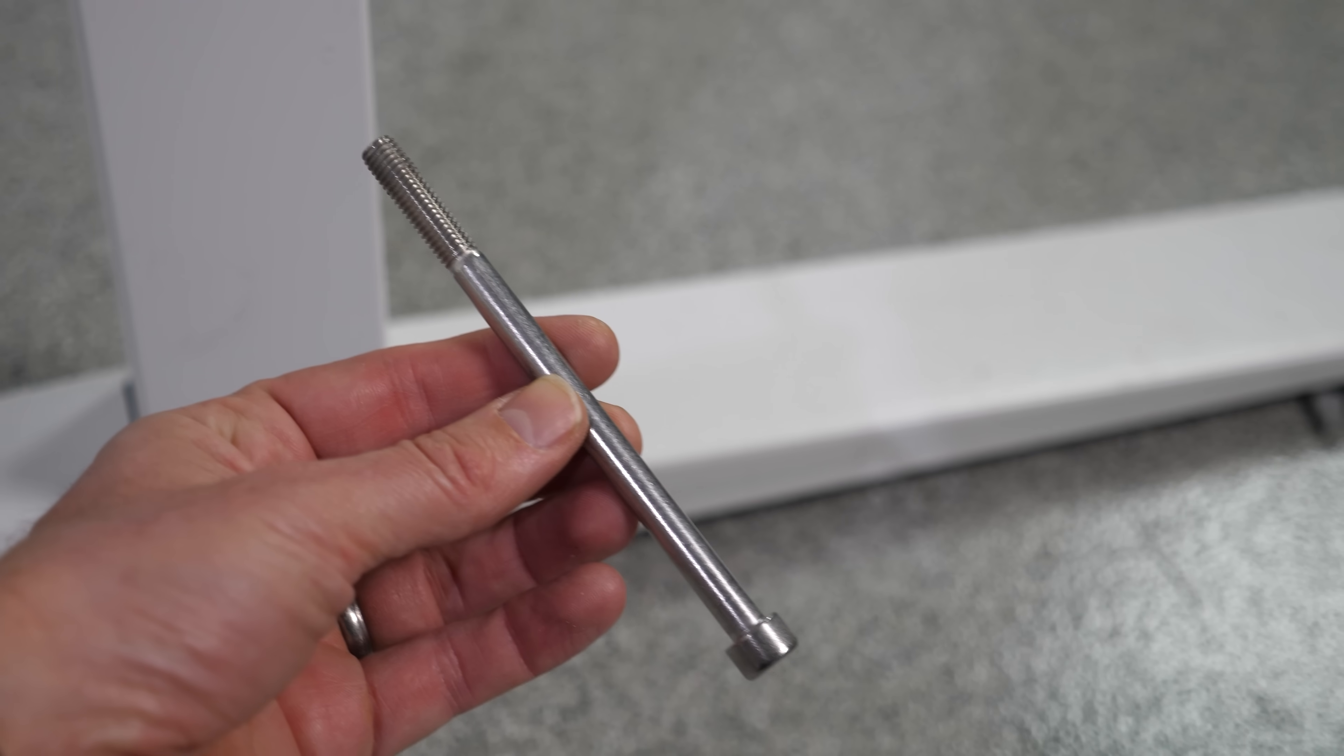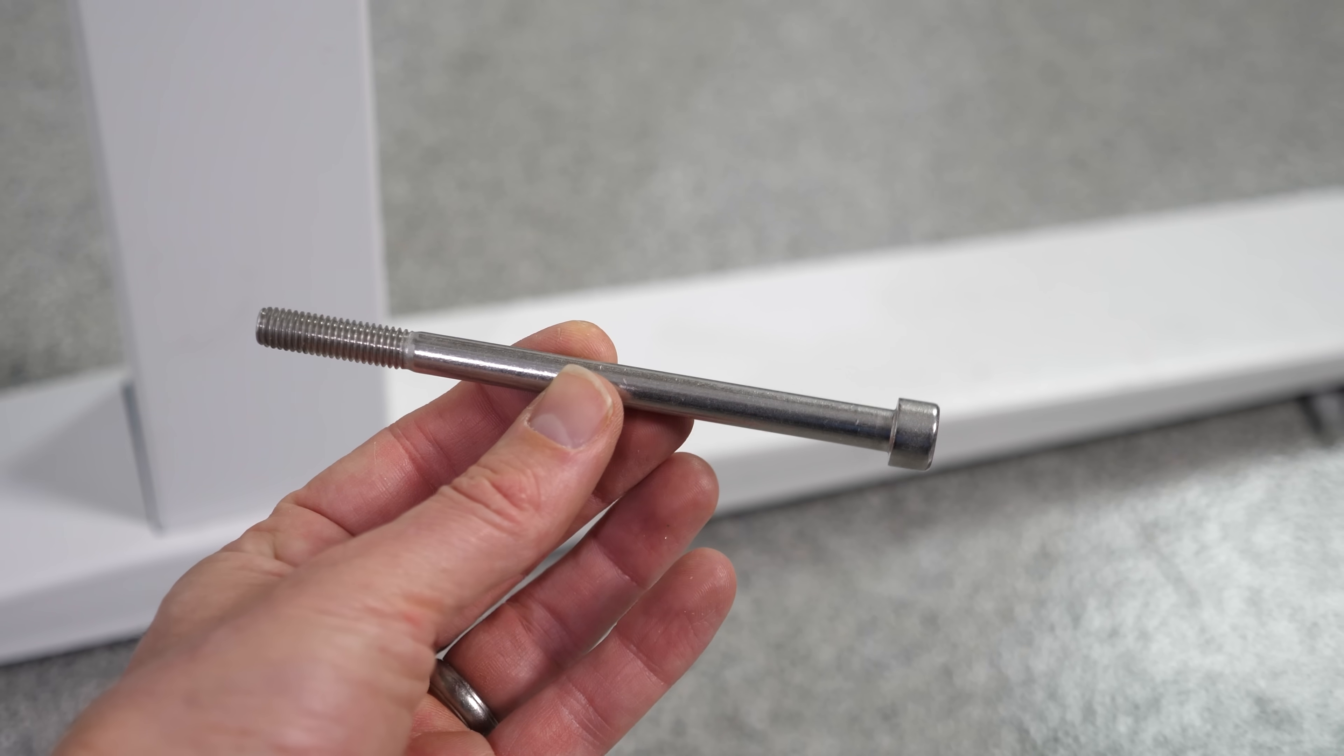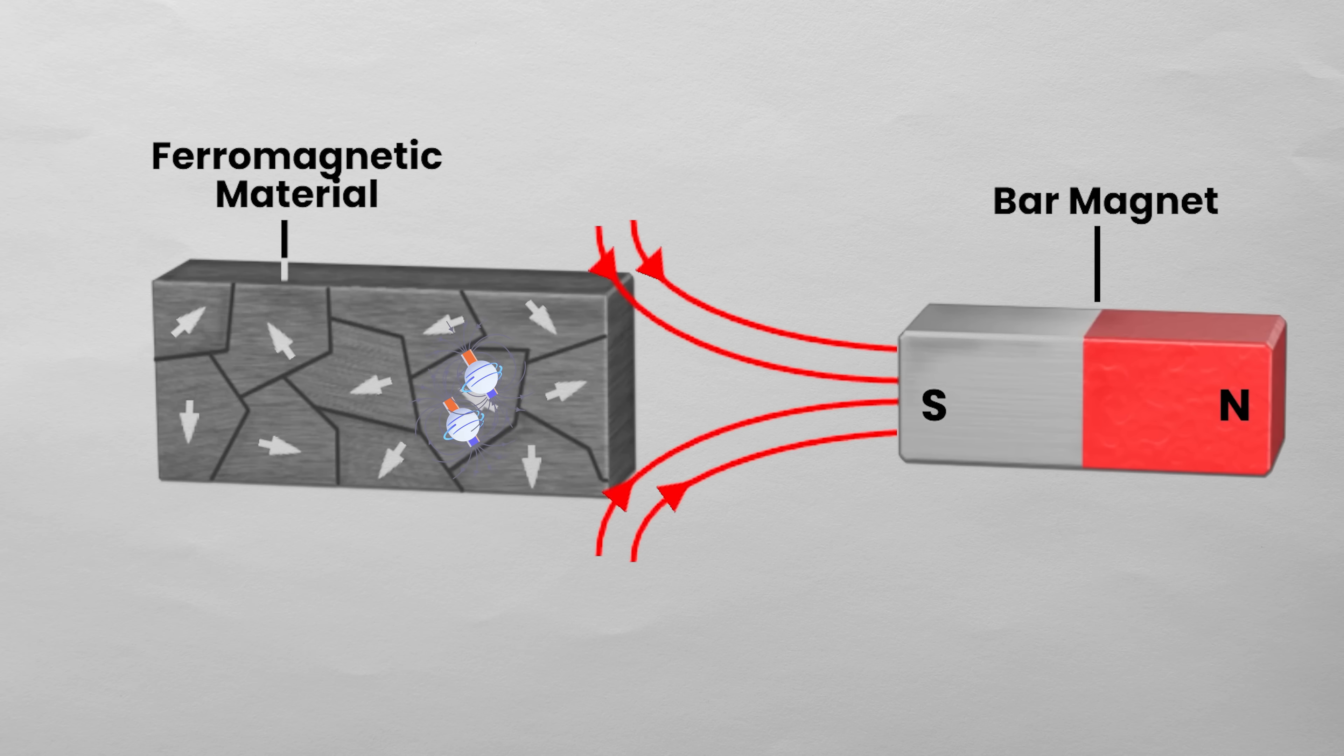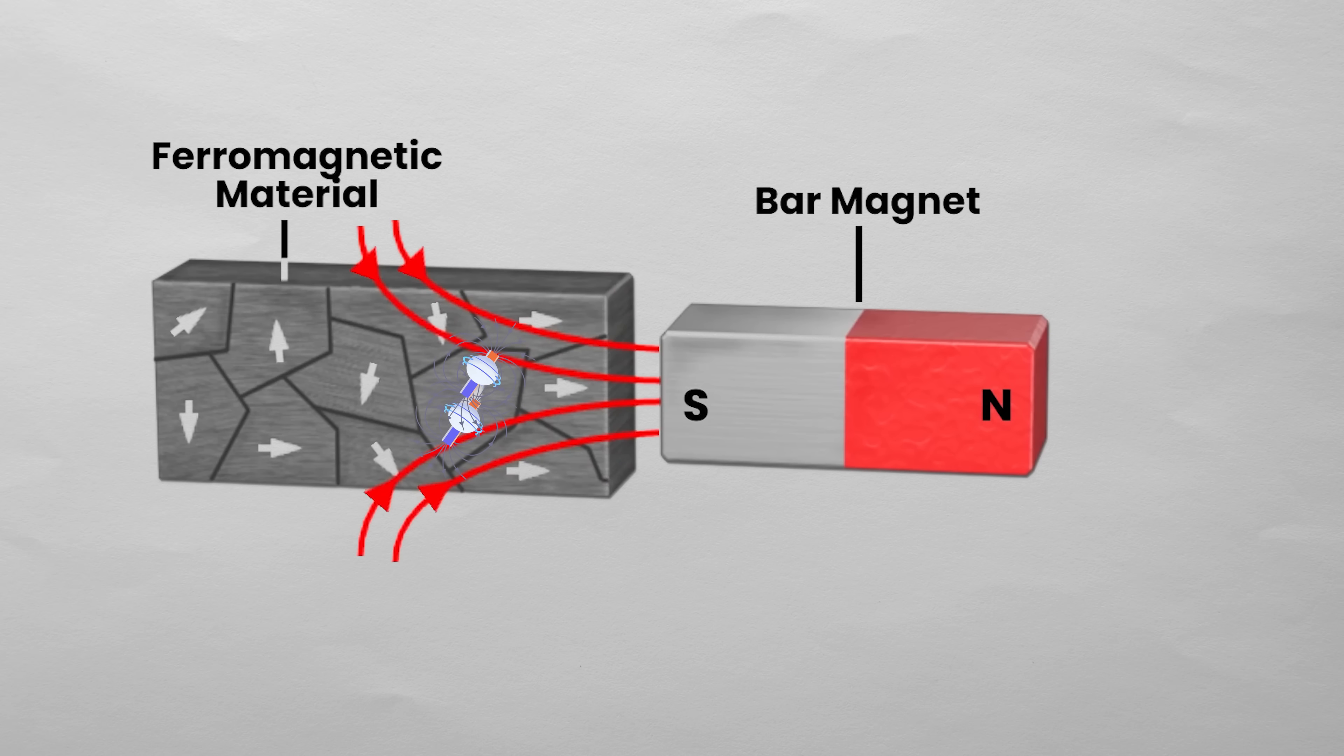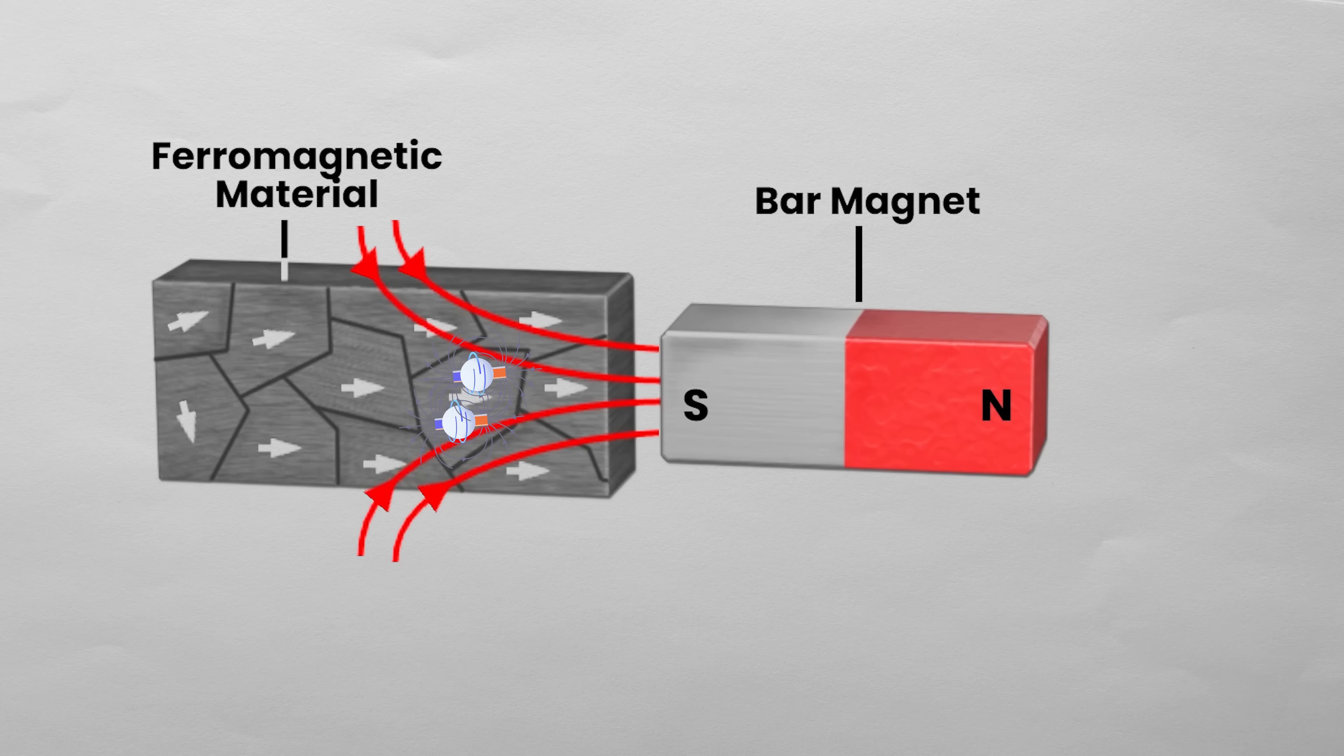Here I have a steel bolt. The iron in the bolt is ferromagnetic, meaning it contains unpaired electrons that align in domains, all pointing in the same direction. If I place this bolt in a magnetic field, I can get entire domains of electrons to flip their spin, just like flipping the direction of a spinning fan.